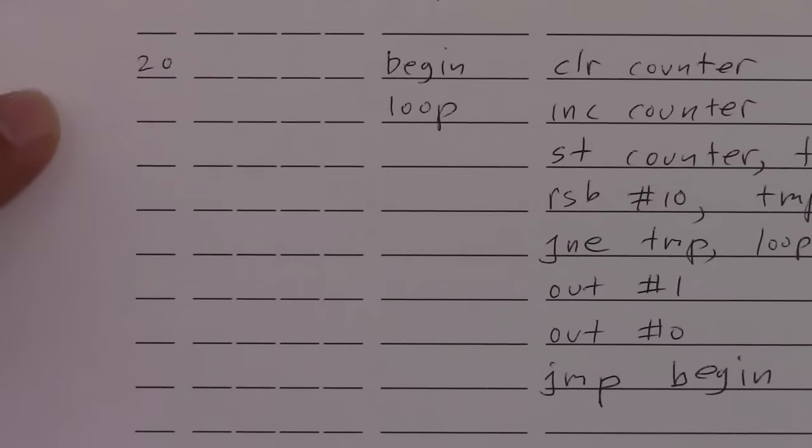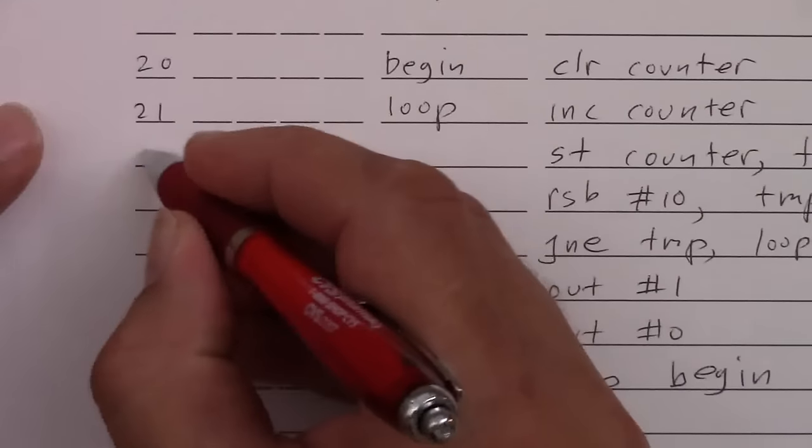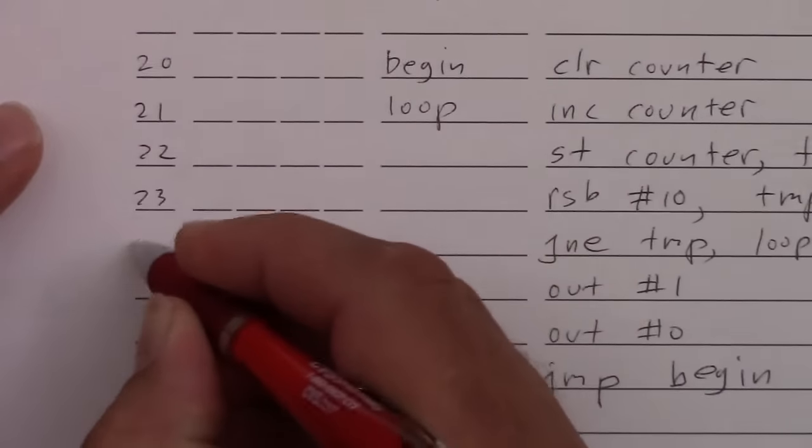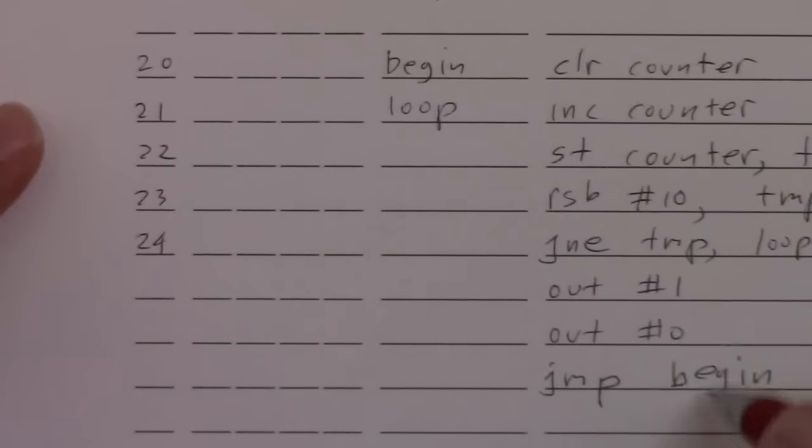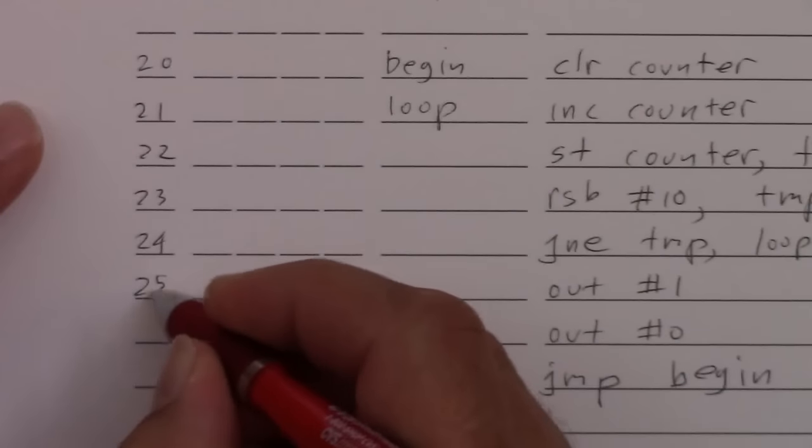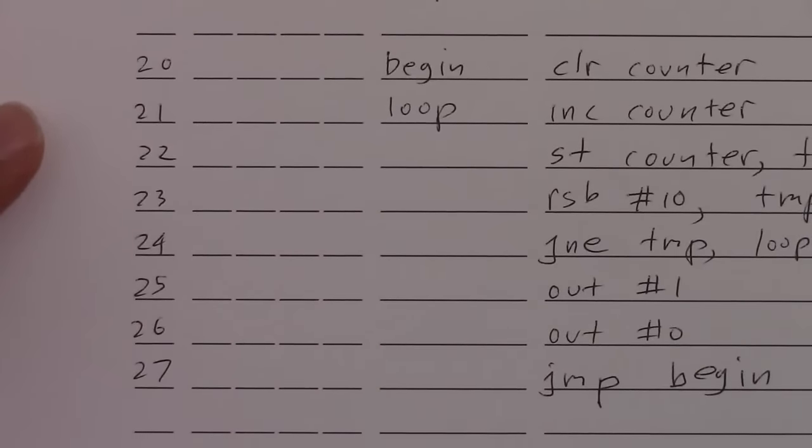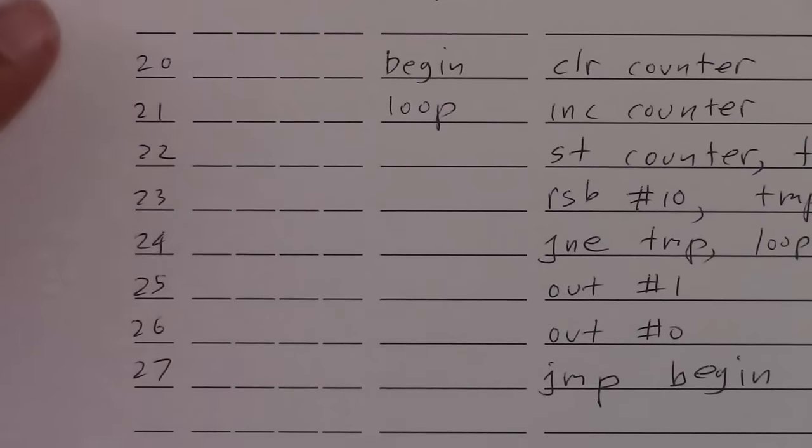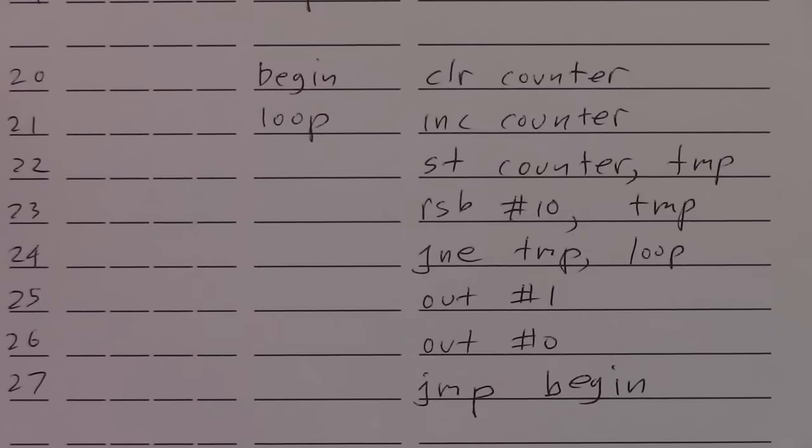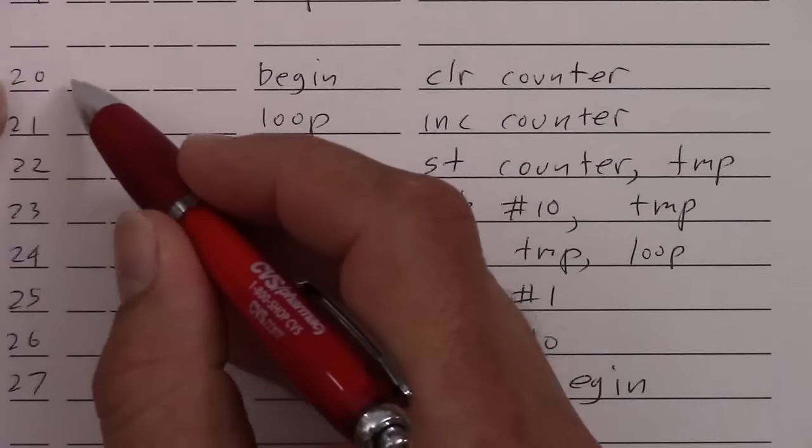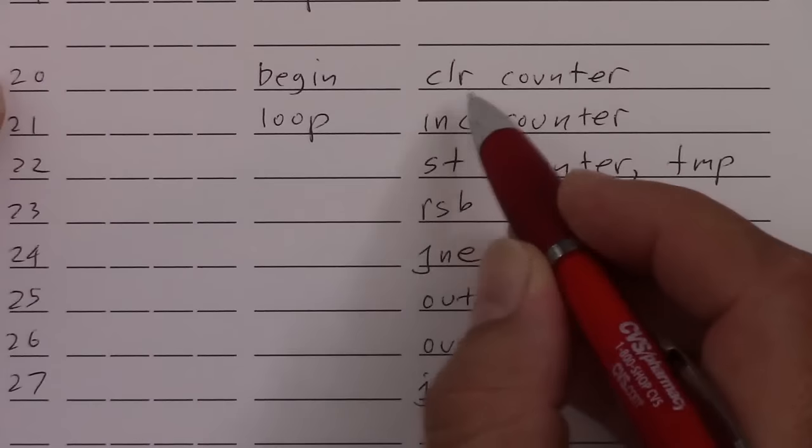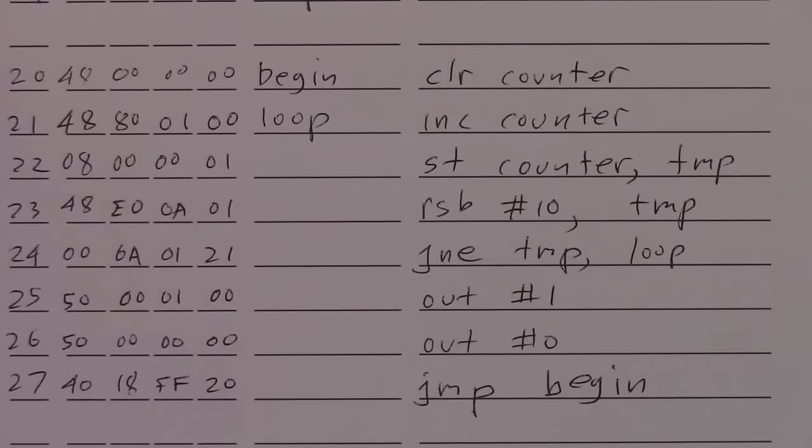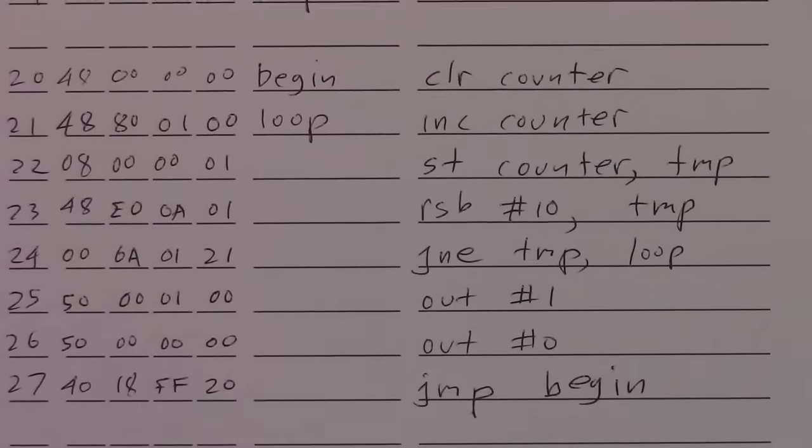So let's write in all the addresses. That way we know for jumps what the address is going to be. And now, I may fast forward this part, but now we're going to translate these instructions into machine code. So first is clear. Now we have a little program. Let's enter it onto the relay computer.